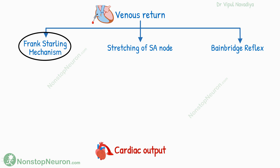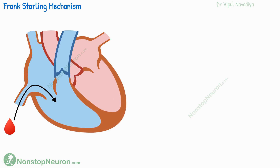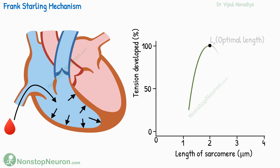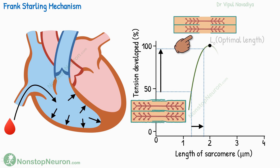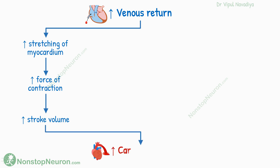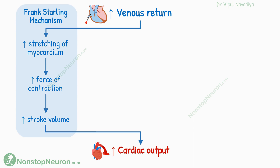First, let's see the Frank-Starling mechanism. An increase in venous return increases the end-diastolic volume. When more blood returns to the heart, the wall of the ventricles gets more stretched. We have already studied in the video on length-tension relationship that within physiological limits, the more the initial stretching of the muscle, the more tension it can develop. This is because with increasing initial length, actin and myosin take a more optimal position to interact with each other, so the number of cross-bridge interactions increases, resulting in increased force of contraction. In short, increase in venous return increases the stretching of the myocardium, so the force of contraction increases, which increases stroke volume and therefore cardiac output. This is called the Frank-Starling mechanism of the heart.